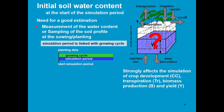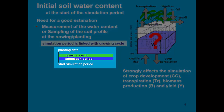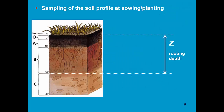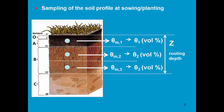Since you define the initial condition at the moment of sowing and planting, the growing cycle and the simulation period overlap. The start of the simulation period is the planting date. Sampling of the soil profile at sowing and planting consists of sampling at different depths. For the top soil, we take a soil sample, determine the mass water content, and by multiplying it with the bulk density, you get the volumetric water content.